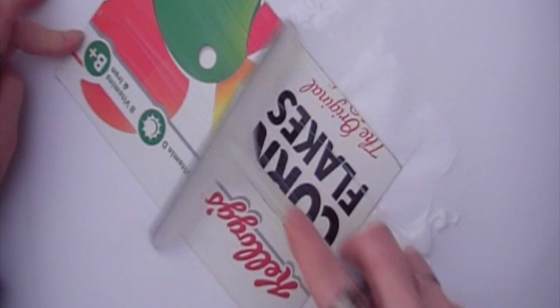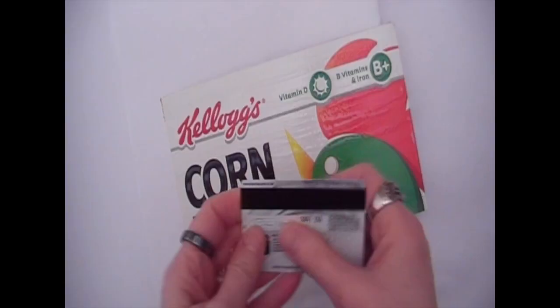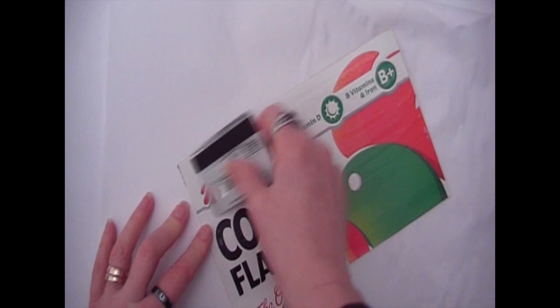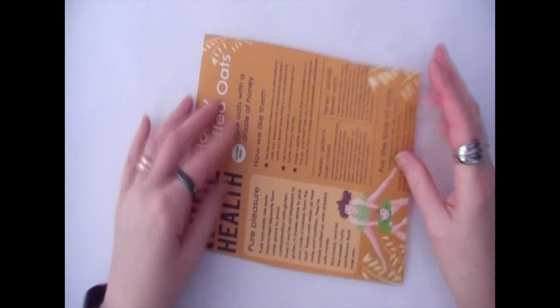You can use a window squeegee or a credit card to spread the glue. And then when it's dry, here's another one that I did earlier, a couple of coats, very strong.